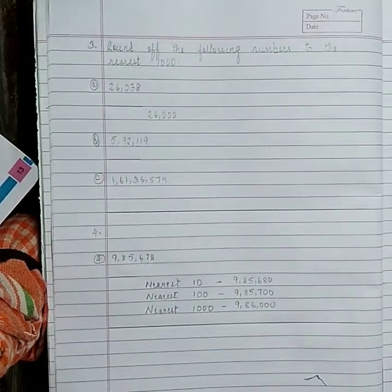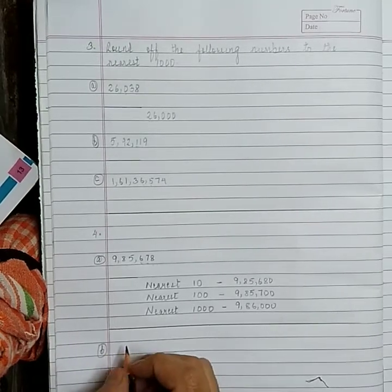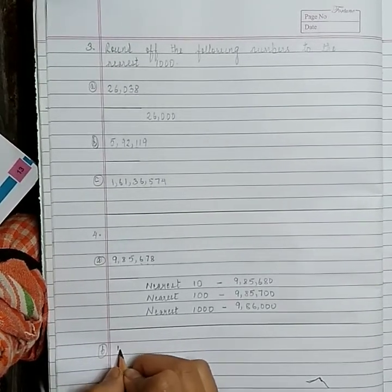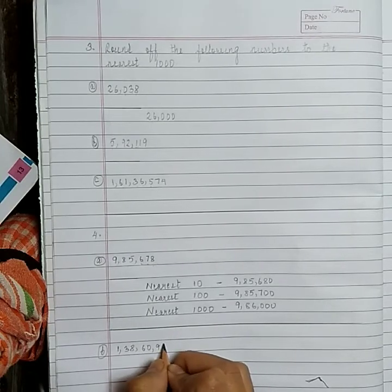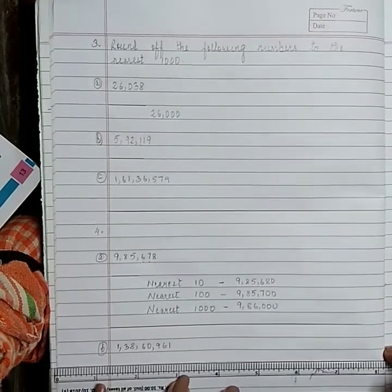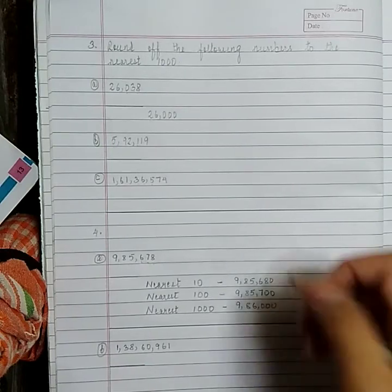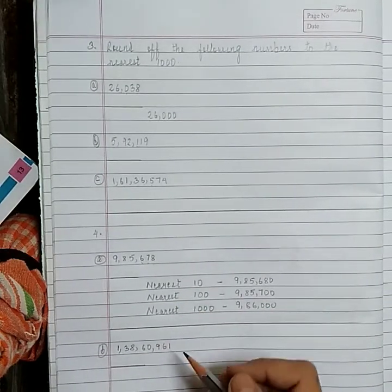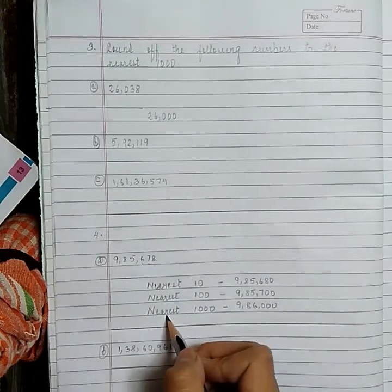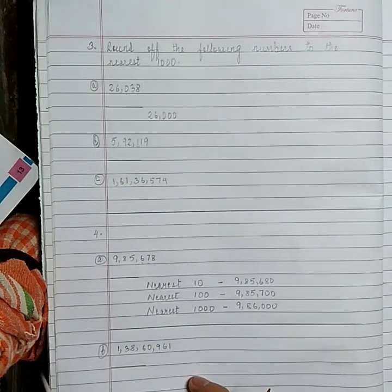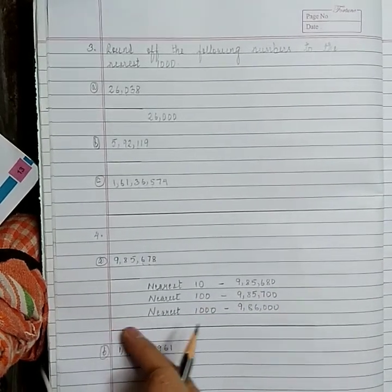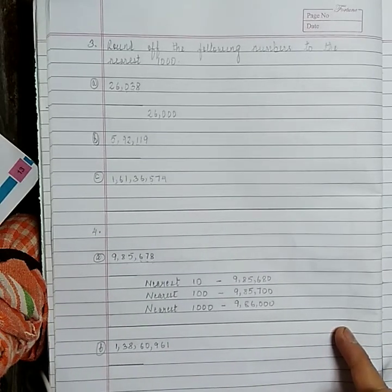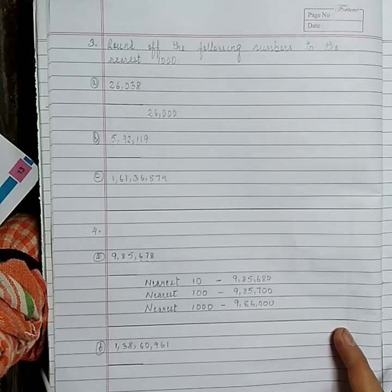Draw a long line and copy down question number B: 1,38,60,961. I hope you all can do it. After you finish question 4, draw a long line and submit your assignment today between 4 to 8 p.m. Thank you.